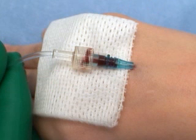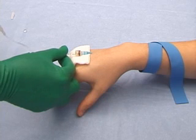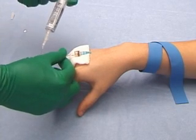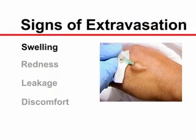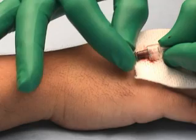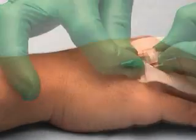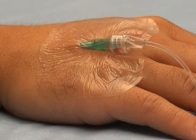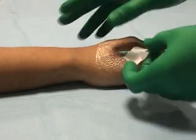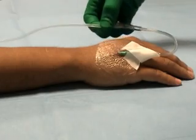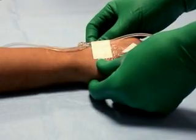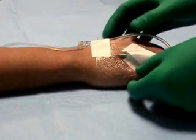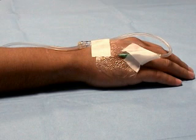Make sure the tourniquet has been released and confirm that the cannula is patent by flushing it with normal saline. The volume used depends on the size of the vein and the gauge of the catheter. Check that there is no swelling, redness, leakage, or discomfort around the insertion site. Attach the intravenous fluid tubing to the cannula and start the fluid infusion. Secure the cannula with a transparent occlusive dressing placed over the cannula hub, and confirm that the hub is clearly visible through the dressing to facilitate monitoring. After securing the cannula with tape, loop the intravenous tubing and secure it away from the insertion site to prevent accidental displacement, decrease cannula manipulation, and lower the risk of venous contamination or irritation.